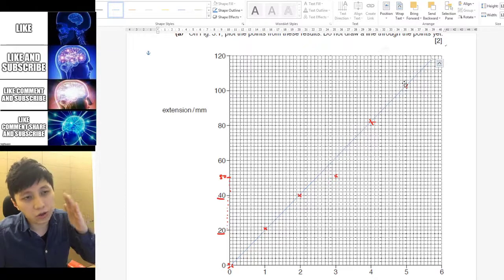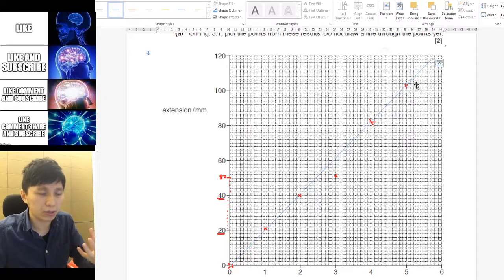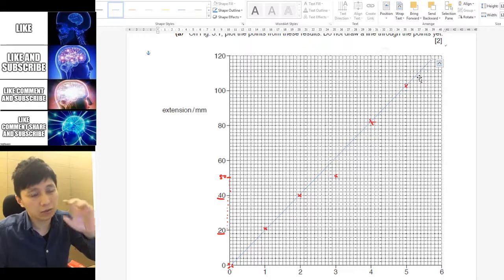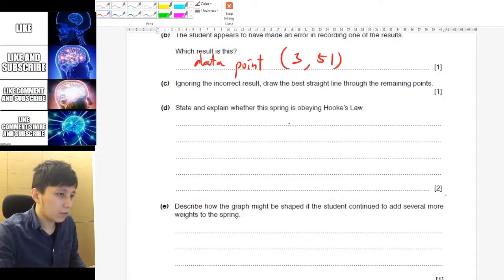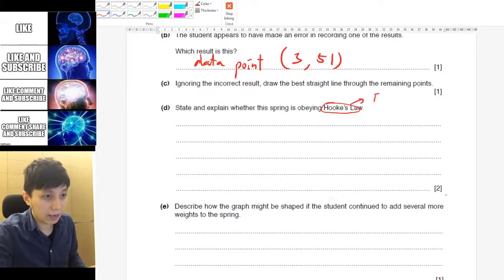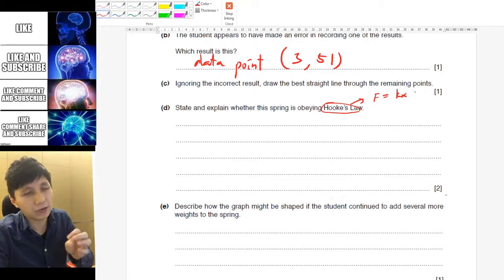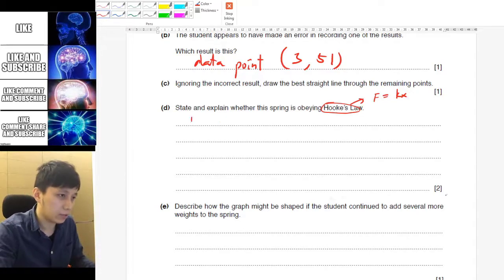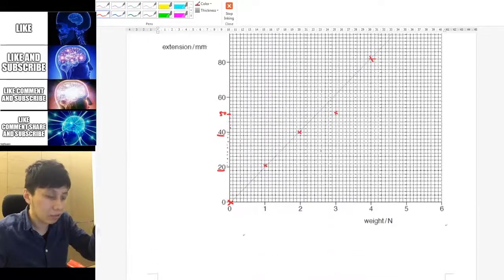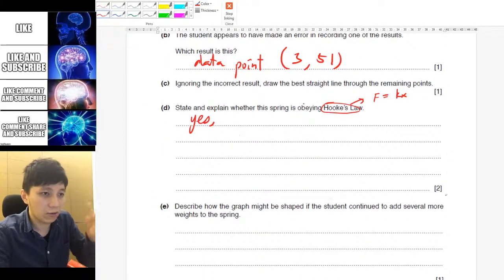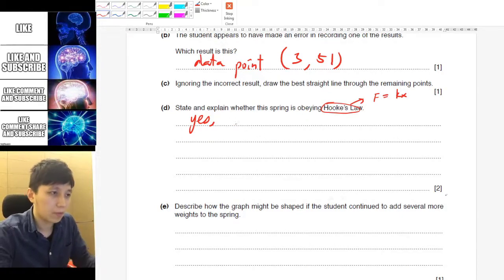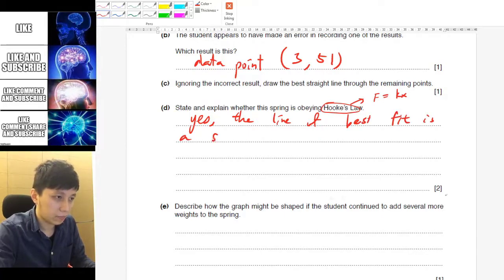And one more thing is, don't stop your line at the last data point. Because you are showing the general trend. And therefore, you can always extend your line further until the end of the graph paper. Part D. It asks us whether or not the spring is obeying Hooke's law. So, again, Hooke's law is referring to the equation that is f equal to kx. And that means the force and the extension having a proportional relationship. And the answer is yes. And we have to relate it to the graph.